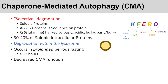CMA function is decreased in some situations. One of those situations is the normal aging process — as we get older, our CMA function actually decreases. Interestingly, certain diets have also been shown to decrease CMA function; in particular, the western diet of high fat and high sucrose has been shown to decrease CMA function.